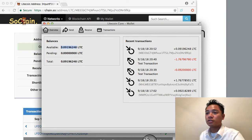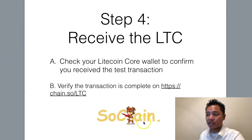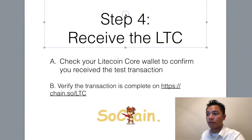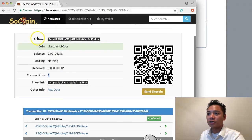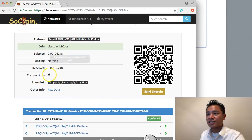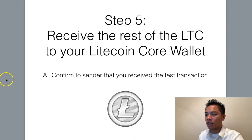That went smoothly. We can move on to step number four, which is to check that the Litecoin Core Wallet actually received it — and it did, as you can see. We can verify that one more time on SoChain. Refreshing the page, it says the transaction confirmed. Now let's move on to step number five, which is to receive the rest of the Litecoin to your Litecoin Core Wallet.